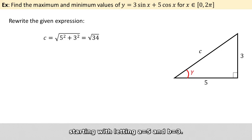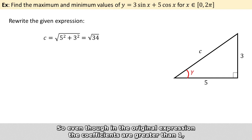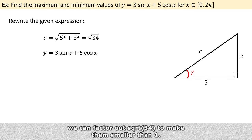starting with letting a equals 5 and b equals 3. Hence, we get c equals square root of 34. So even though in the original expression the coefficients are greater than 1, we can factor out square root of 34 to make them smaller than 1.